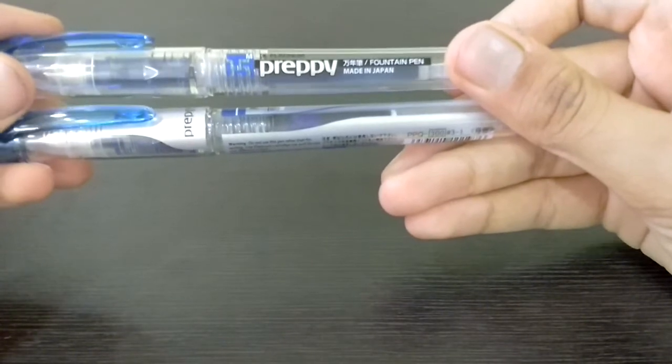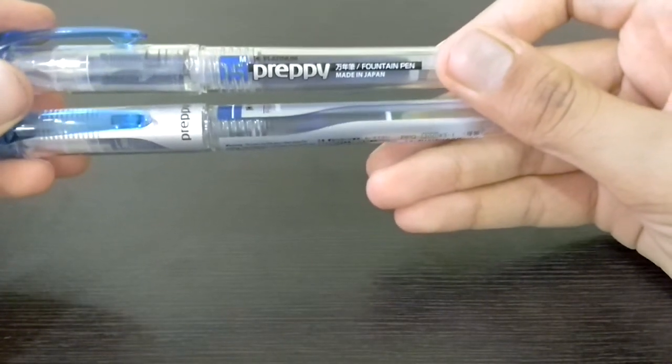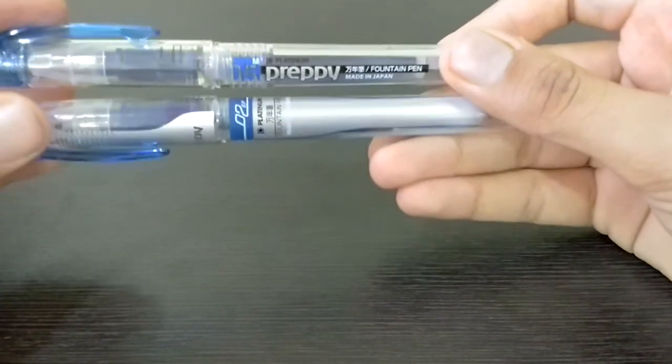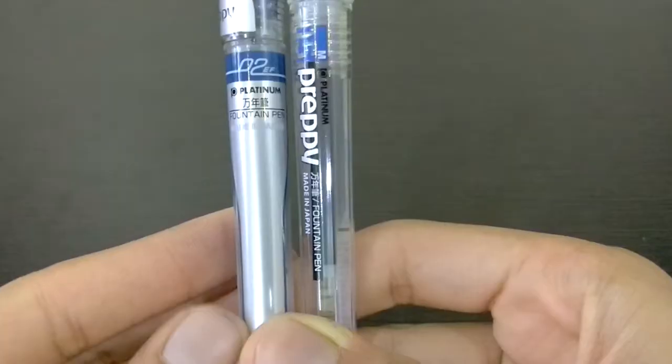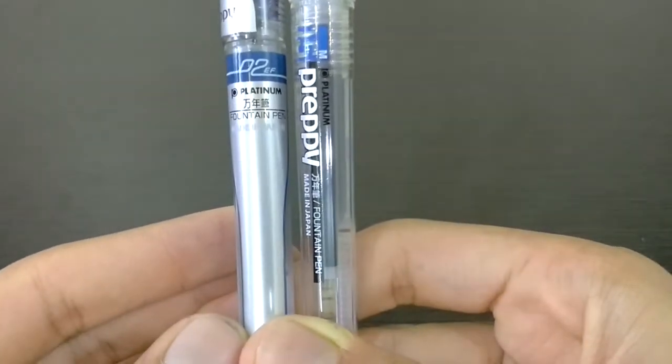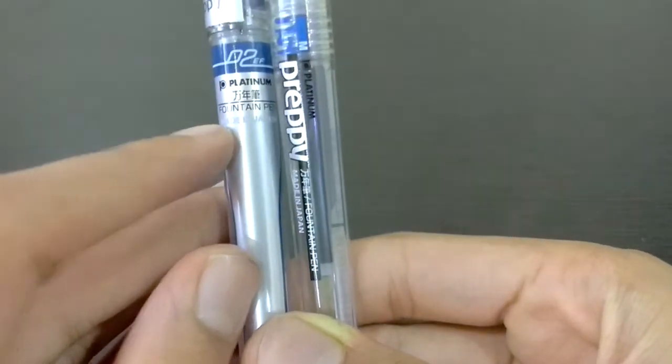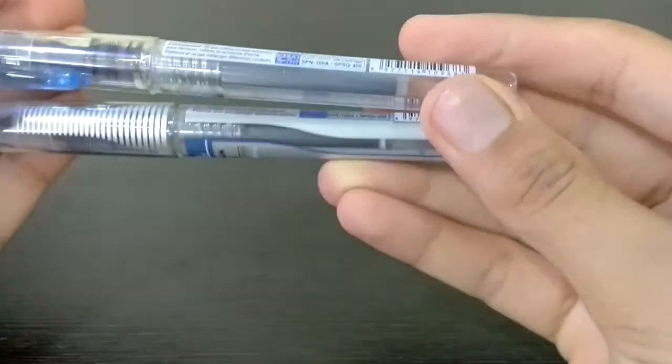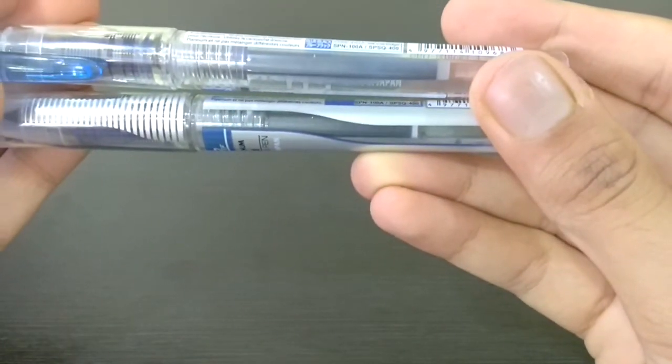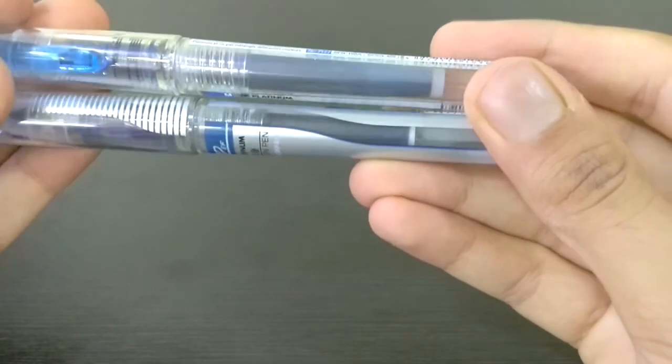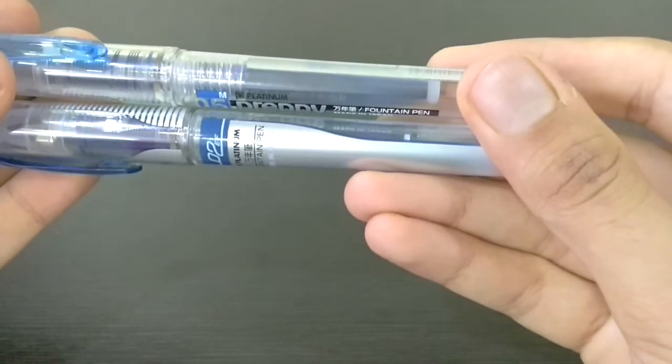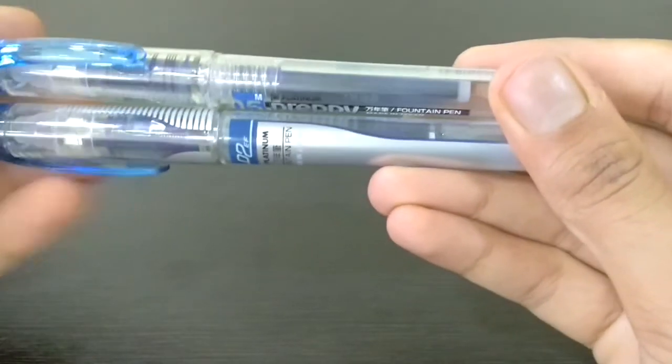They have changed the body in many different aspects. Earlier it was Preppy over here, and now they've done a 02 EF Platinum fountain pen Preppy over here. The body has been changed. Earlier we also had an octagonal shape transparent body, but now most of the part is opaque and we have an octagonal body.